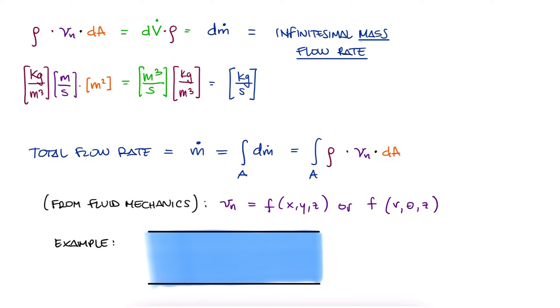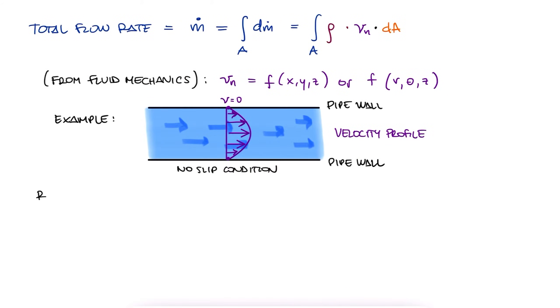For example, from the no-slip condition at the wall of a pipe, the velocity would be zero there, and maximum at the center of the pipe.